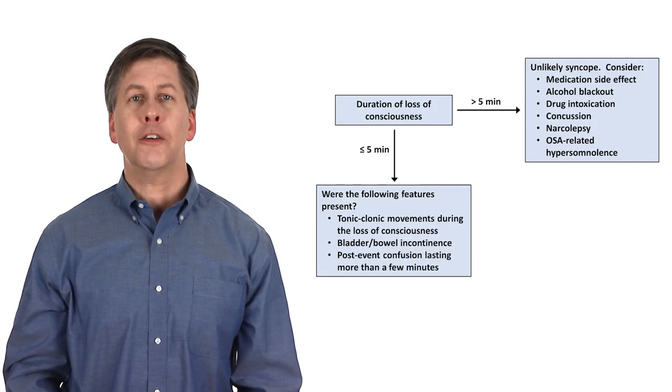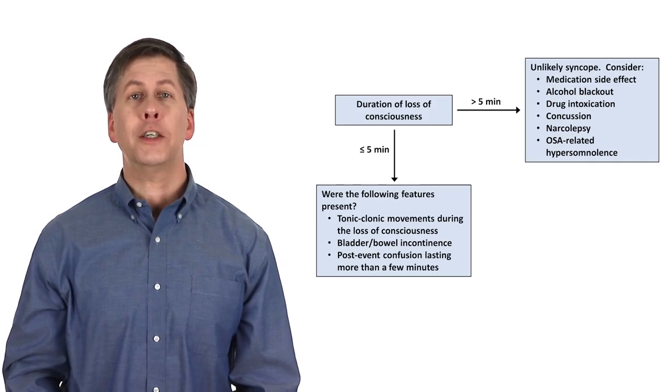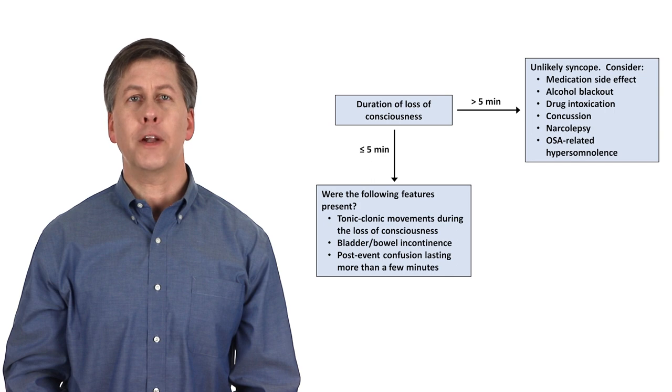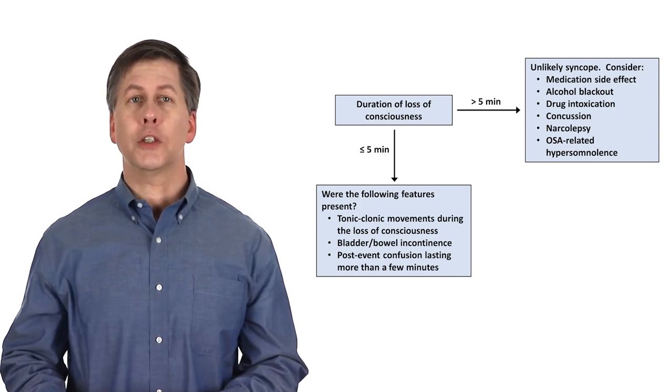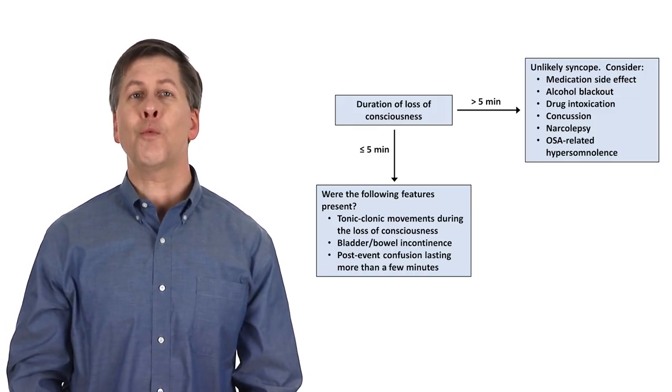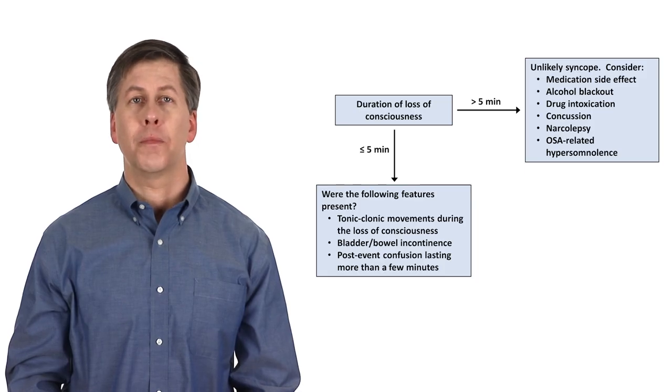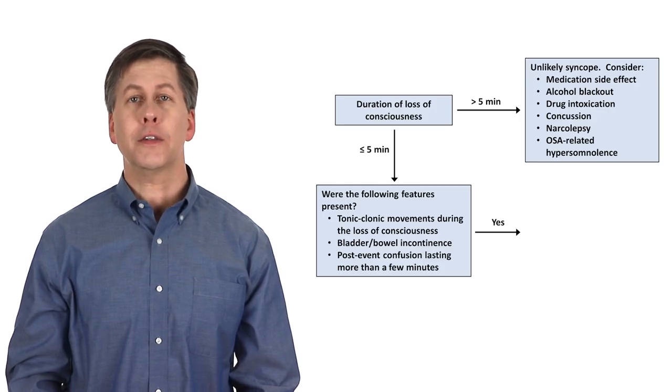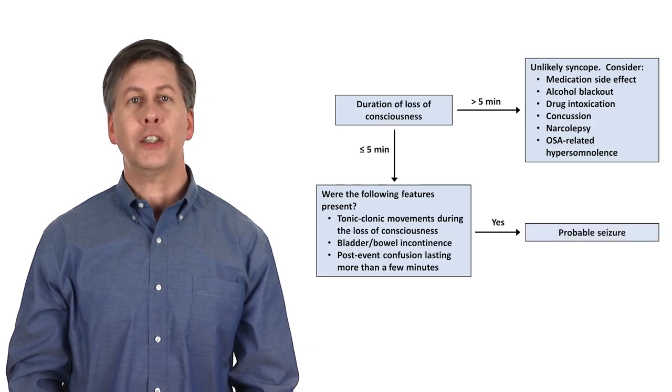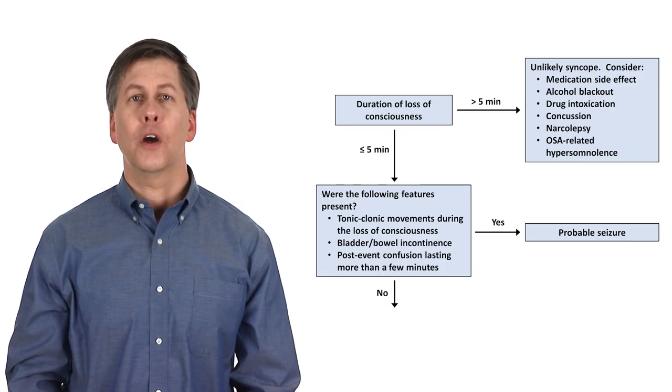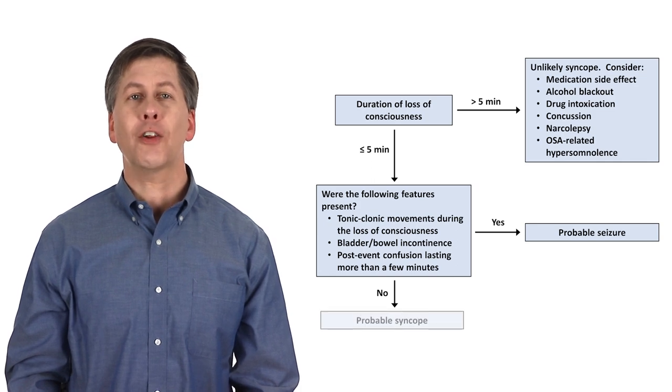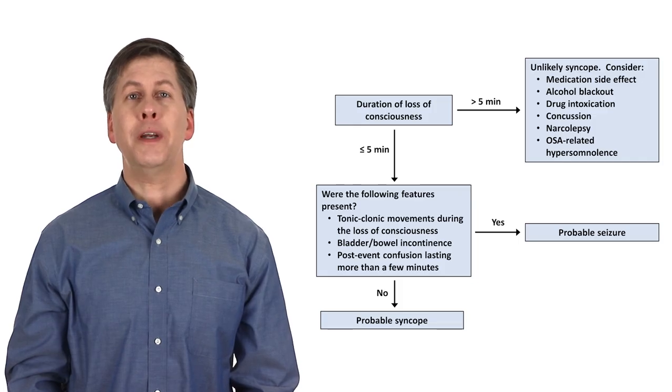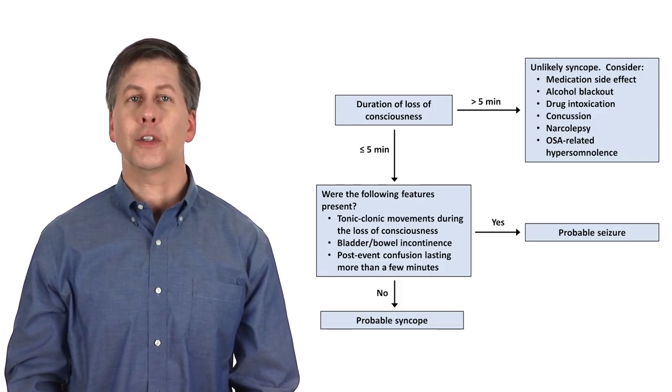And third, how long was the patient confused for once consciousness was regained? Patients with syncope would usually be confused only for seconds to a couple of minutes, whereas patients who have suffered a seizure usually take more than a few minutes for the confusion to fully resolve. None of these three questions will make a black or white distinction between syncope or seizure and there will be patients that won't clearly have one or the other after your history. However, as a general rule, patients who have witnessed tonic-clonic movements, bladder plus or minus bowel incontinence, and prolonged confusion after the event likely had a seizure. And if there were either no tonic-clonic movements or just a few non-rhythmic jerks, no incontinence, and brief post-event confusion, the patient likely had syncope. Also, as a very general rule, syncope is more common than seizure in adults who do not already have a diagnosis of a seizure disorder.